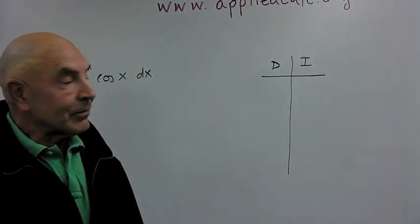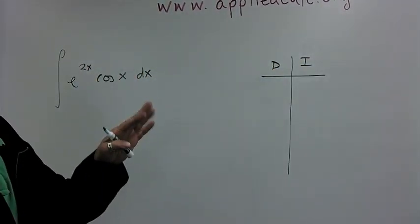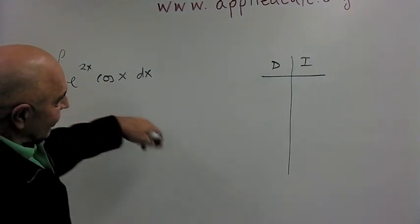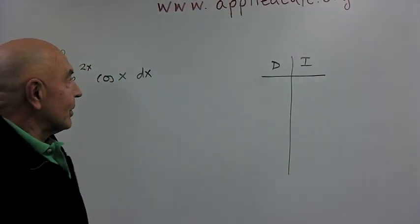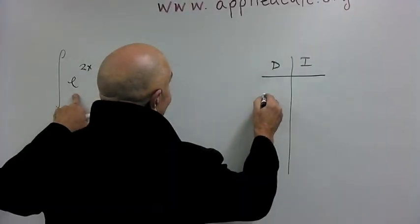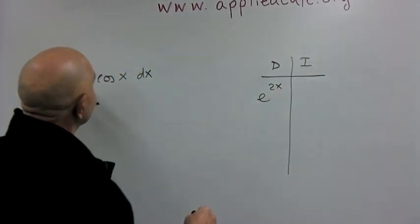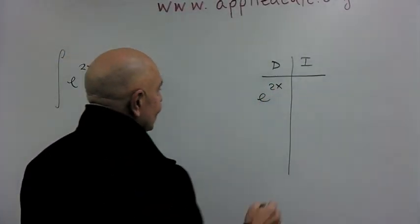It turns out that with this kind of problem, it doesn't matter. We can put the e to the 2x in the D column or the I column and the same result will occur. So, we're going to start with e to the 2x in the D column just because it's first and the cosine goes in the I column.